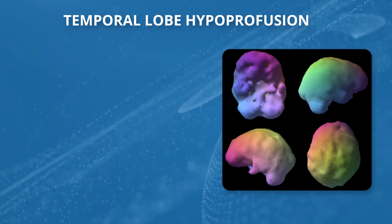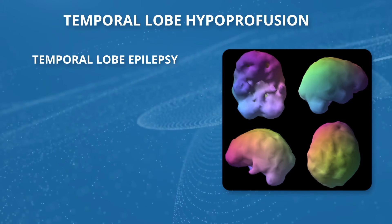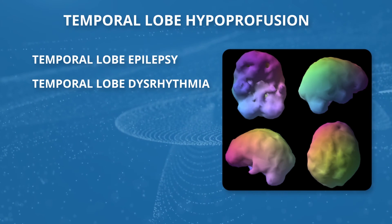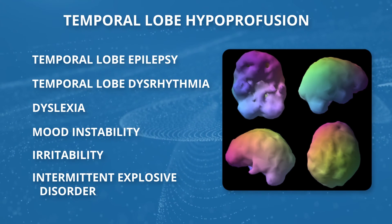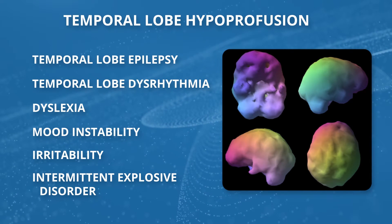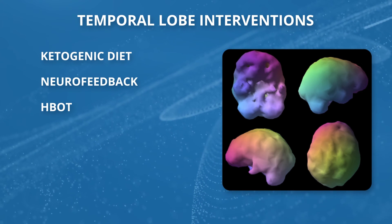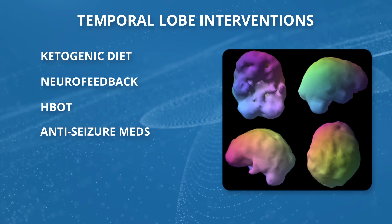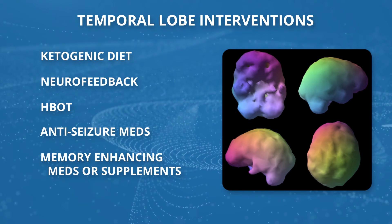Sometimes we'll see temporal lobe hypoperfusion — one or both temporal lobes are low. It can go with temporal lobe epilepsy, or something not quite as severe called temporal lobe dysrhythmia where the rhythm's not quite right. We also see it in dyslexia, mood instability, and irritability. We've seen it in virtually every case of intermittent explosive disorder, and in people who have illusions such as hearing the sound of bees buzzing. Treatment may include a ketogenic diet to decrease seizures, neurofeedback, hyperbaric oxygen, and anti-seizure medications like Lamictal, Neurontin, or Trileptal.